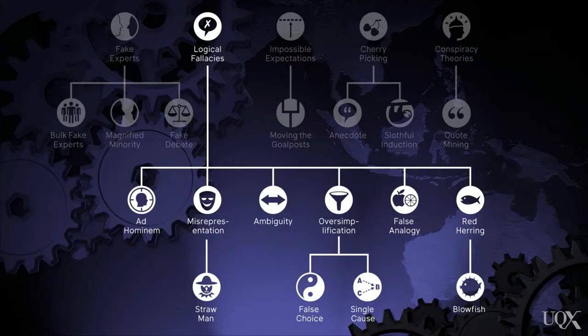Next, let's look at logical fallacies. Generally speaking, logical fallacies appear in arguments where the conclusion doesn't logically follow from the premises. This is known as a non sequitur — Latin for 'does not follow.' We also call this jumping to conclusions. Let's look at some types of logical fallacies.